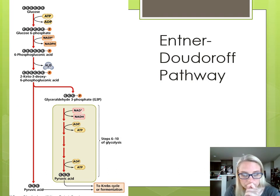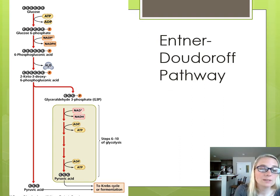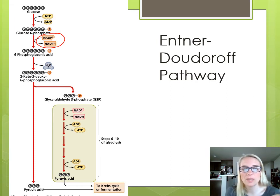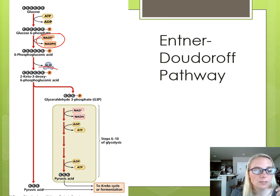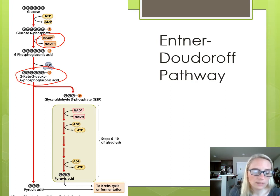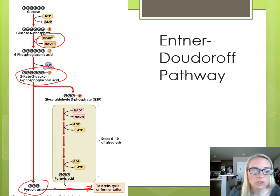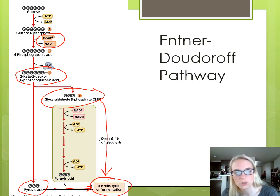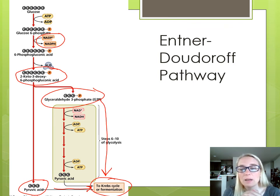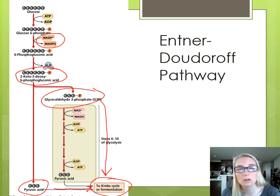The second alternative is called the Entner-Doudoroff pathway, or the ED pathway. It also uses NADP+ and NADPH as opposed to NAD+ and NADH like we see in glycolysis, and we see some slightly different intermediates. But the goal is the same — we get pyruvic acid, which can go to Krebs, and G3P, which can run through glycolysis into Krebs or fermentation. Really, just the first couple of steps are mostly different from glycolysis. Most likely a cell would use this pathway because it lacks the enzymes for the first five steps of glycolysis, but this alternative pathway allows it to continue producing G3P and pyruvic acid.